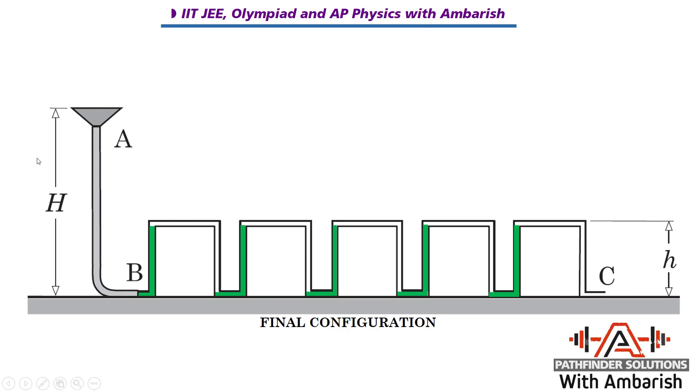Now if you understand the final configuration, it is very easy to calculate the relation between small h and capital H. Here the atmospheric pressure is there, so throughout here there is atmospheric pressure. And here there is a water column. So the pressure over here becomes ρgh, and at the horizontal level it continues ρgh. We can ignore the density of air.